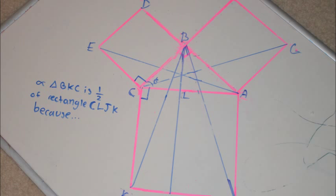The same can be said about triangle BKC and rectangle CLJK. The base of the triangle is KC and the height is CL. So the area of triangle BKC is KC times CL times half. The area of rectangle CLJK is just CK times CL. Clearly, triangle BKC is half of the rectangle CLJK.